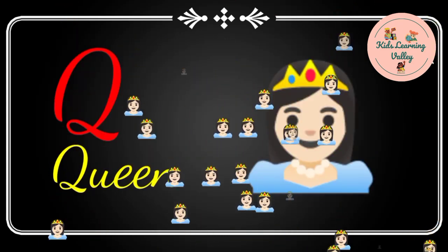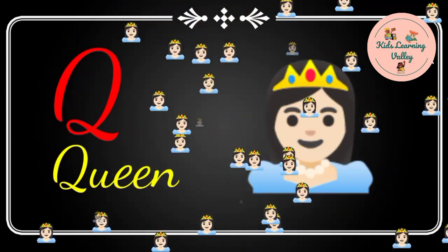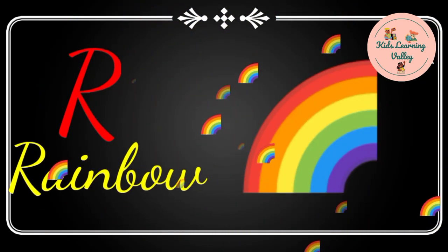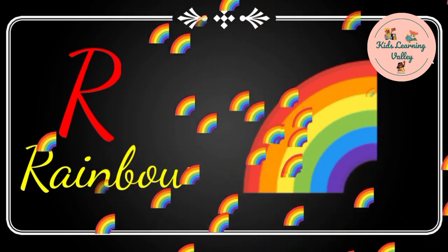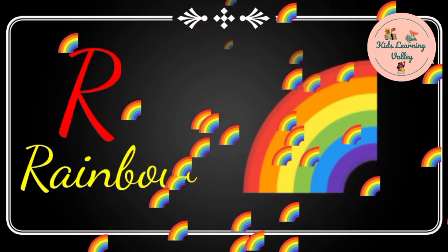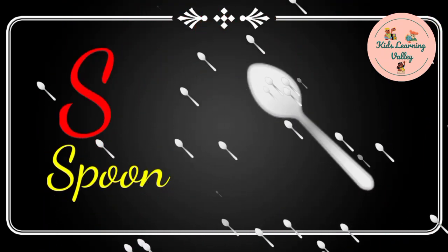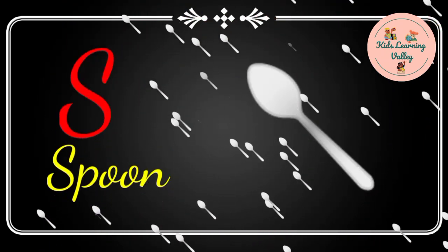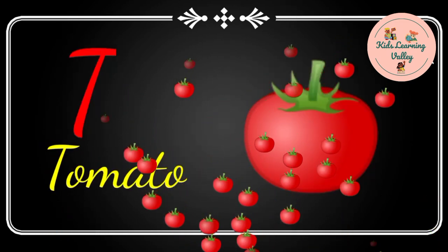Q for queen. R for rainbow. S for spoon. T for tomato.